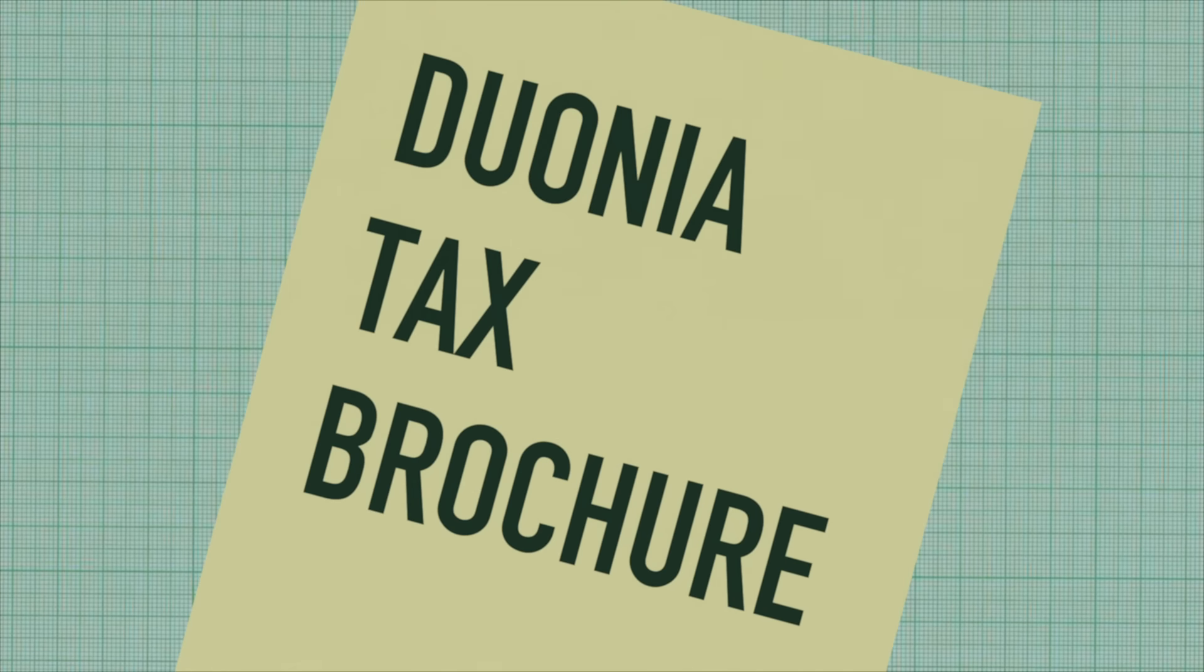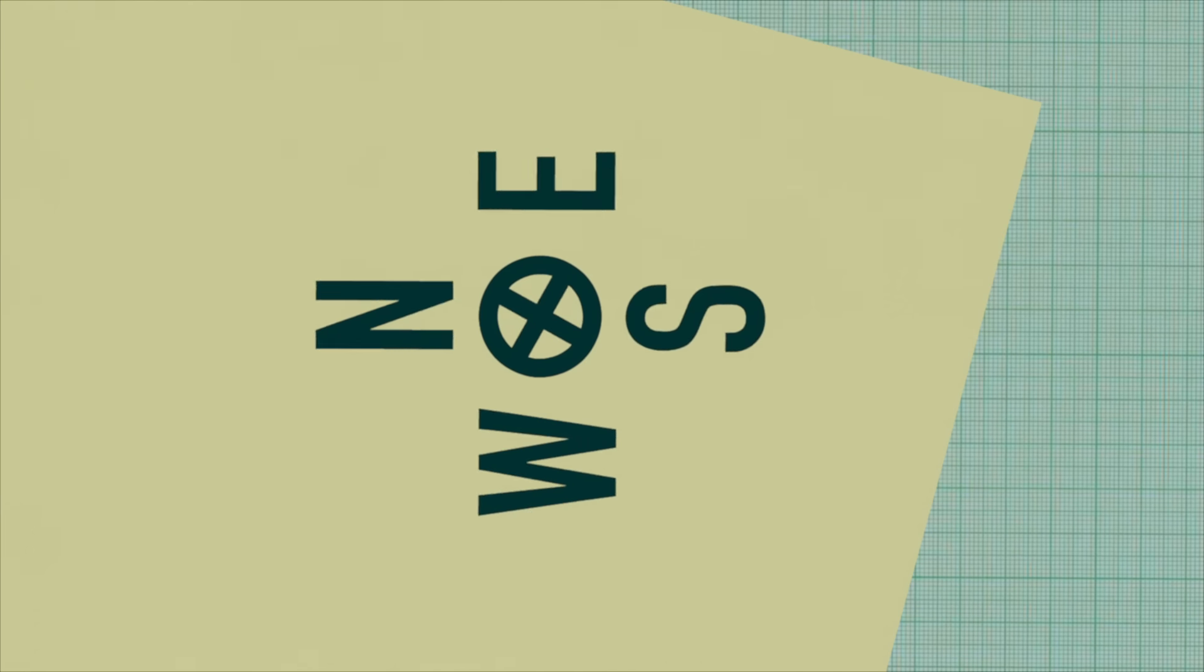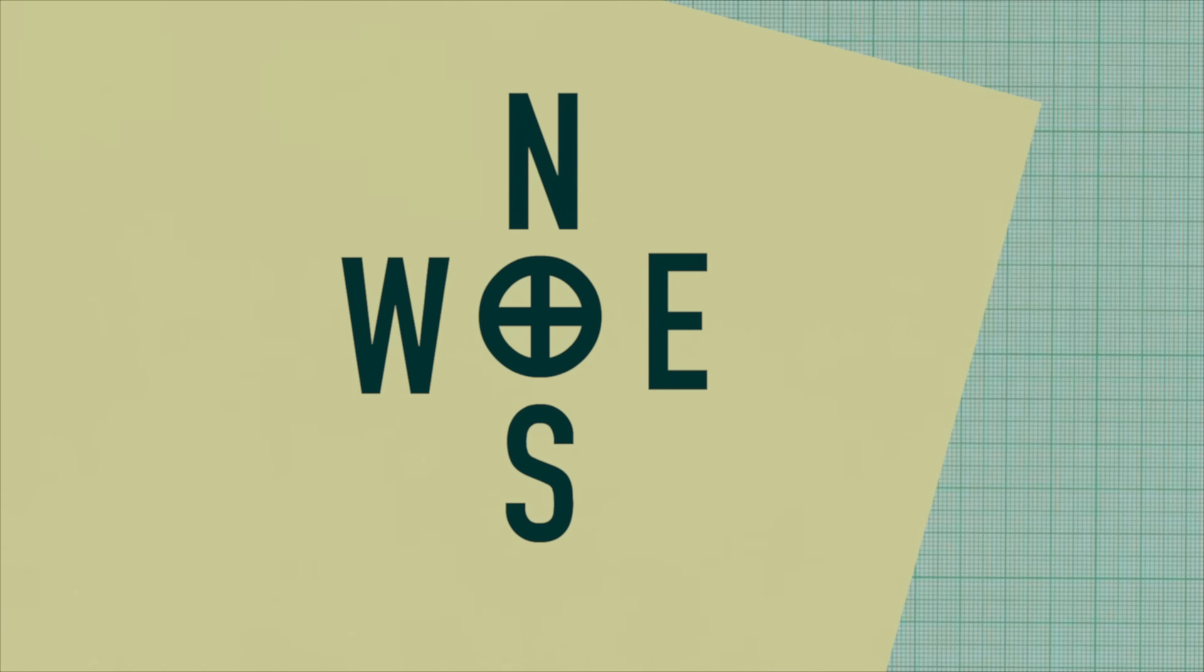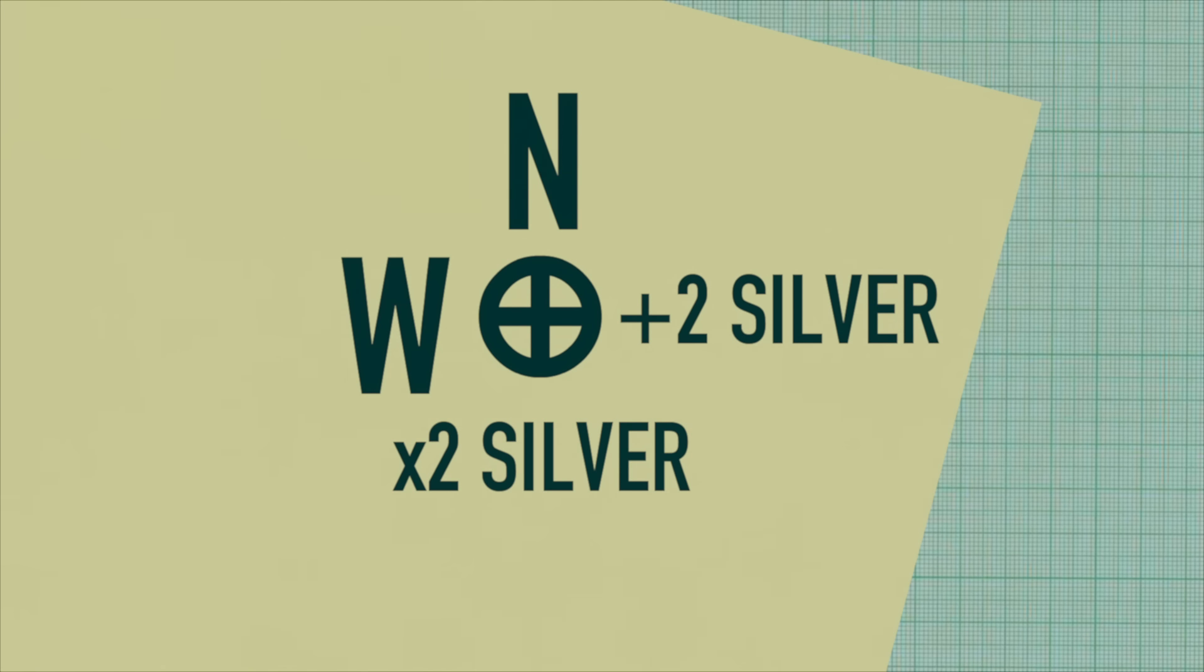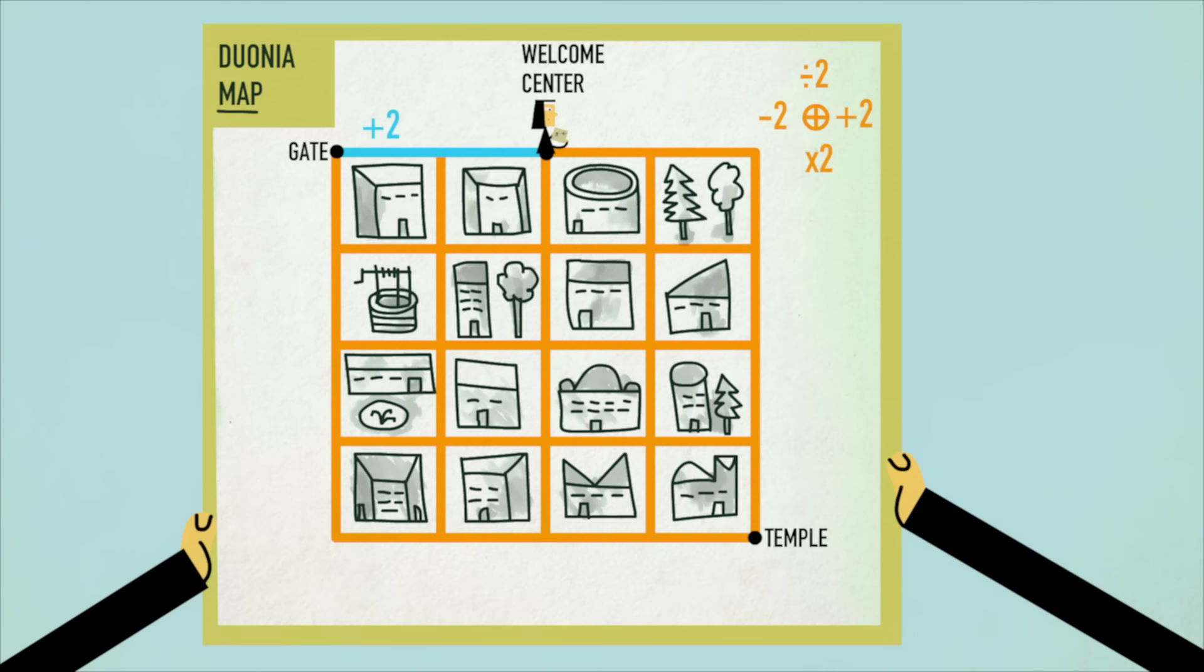As you learn from the brochure, Duonia imposes a unique tax on all visitors, which must be paid when they arrive at their destination within the city. The tax begins at zero, increases by two silver for every block you walk east, and doubles for every block you walk south. However, a recent reform to make the tax fairer halves your total bill for every block you walk north, and subtracts two silver for every block you walk west. Just passing through the gate and the welcome center means you already owe four silver.